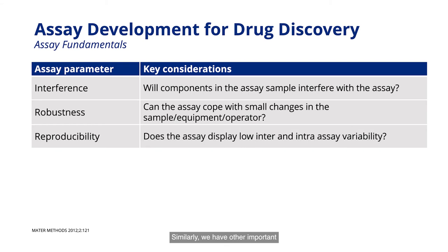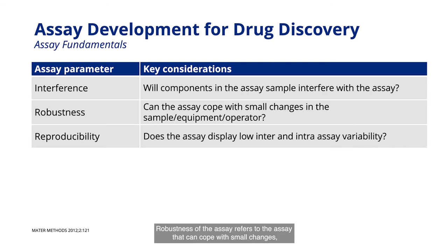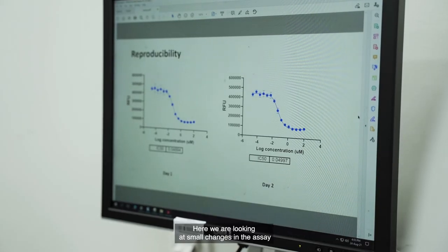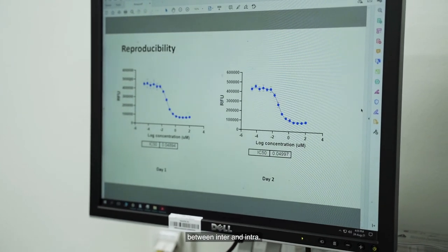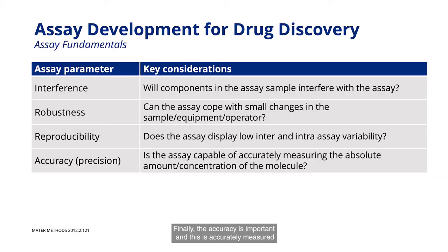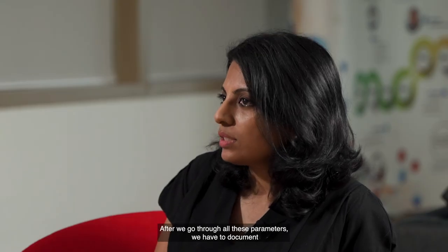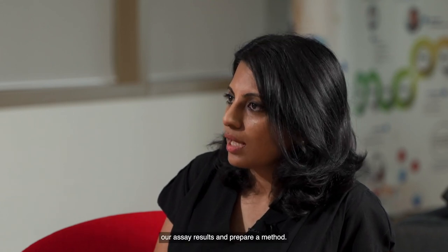We also have other important parameters like robustness and reproducibility. Robustness of the assay refers to the assay's ability to cope with small changes, and this should not be altered because of an operator, equipment, or sample preps. Reproducibility looks at small changes in the assay between inter- and intra-run variability, and this can be analyzed by running a positive control in every assay. Finally, accuracy is important for understanding the amount or concentration of the molecule. After going through all these parameters, we have to document our assay results and prepare a method.